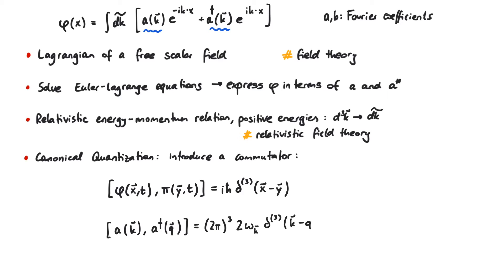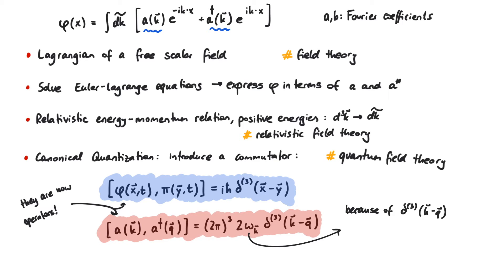Also, the Fourier coefficients a and a dagger are now operators. They fulfill certain other commutation relations. We finally have our answer. The thing that makes a quantum field quantum is the fact that it has to obey a certain commutation relation. Whether you express this commutator in terms of phi and pi or in terms of a and a dagger is a matter of taste.